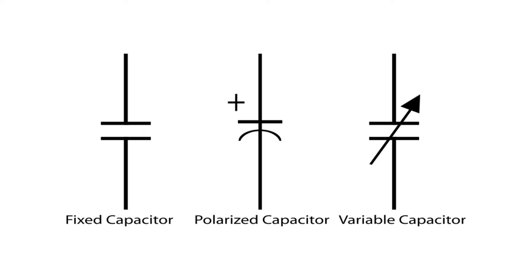Here are the following capacitor types and symbols. A fixed capacitor is a capacitor that stores a fixed amount of electric charge, and this is not adjustable at any instance. Some of them include paper capacitor, plastic capacitor or plastic film capacitor, ceramic capacitor, microcapacitor, electrolytic capacitor, and supercapacitor.